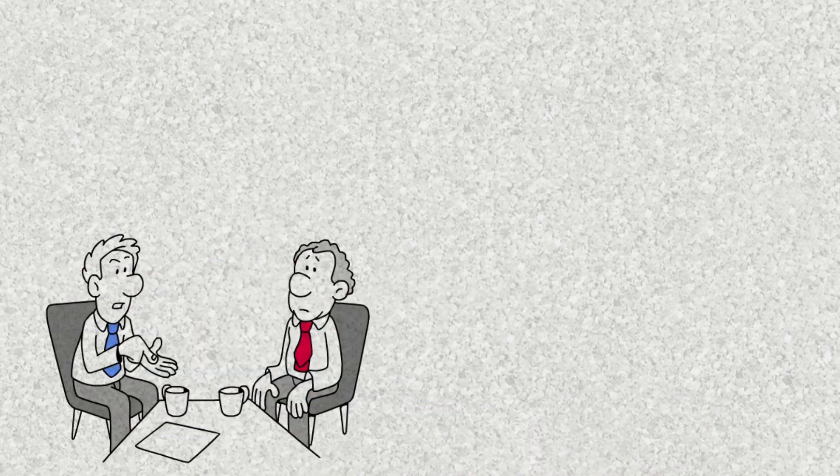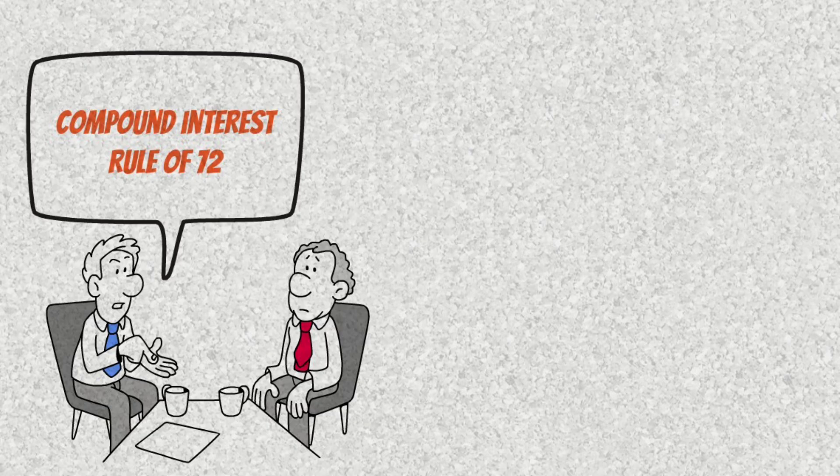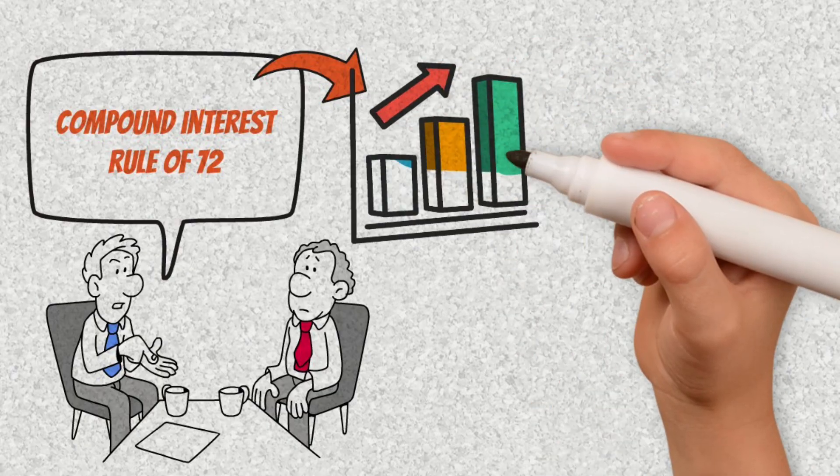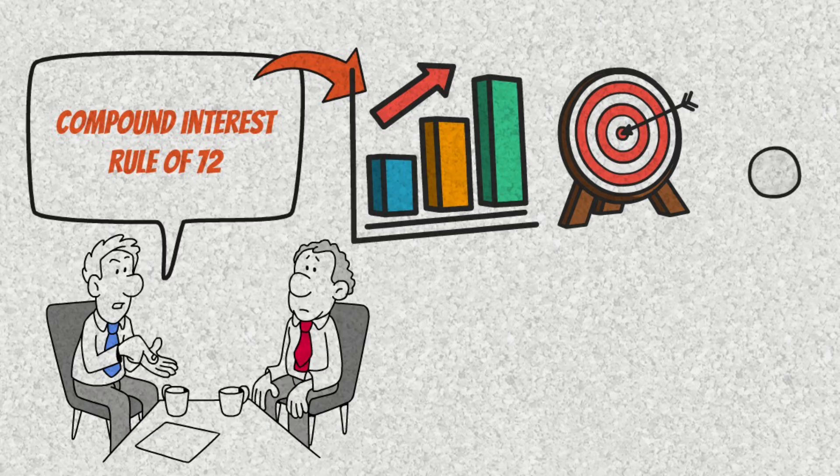I know you may have heard of compound interest, and maybe you're even familiar with the famous rule of 72. But what I'm going to show you goes beyond that. It's a direct, simple, and extremely practical method to accelerate your earnings, reduce the time needed to reach your financial goals, and most importantly, create a snowball effect that grows on its own.